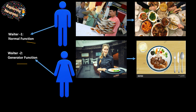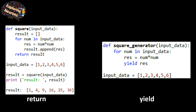Now that we understand the difference through that analogy, let's get technical. Take this example where we perform a squaring operation. The first block is a normal Python function and the second is a generator function for the same operation. We have input data and pass it in. The normal Python function creates a list, loops over every sample, does the squaring operation, appends to the list, and then returns the entire list. When you print the output you get everything all at once.